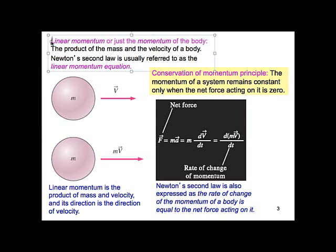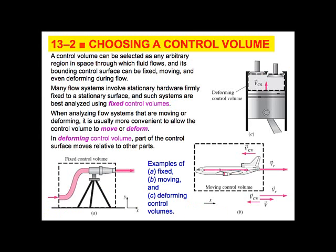So dmv/dt represents the rate of change of momentum. We are going to be considering the linear momentum, or the momentum of the body.